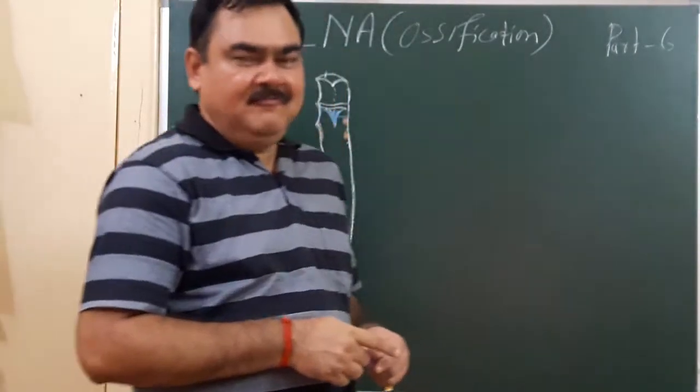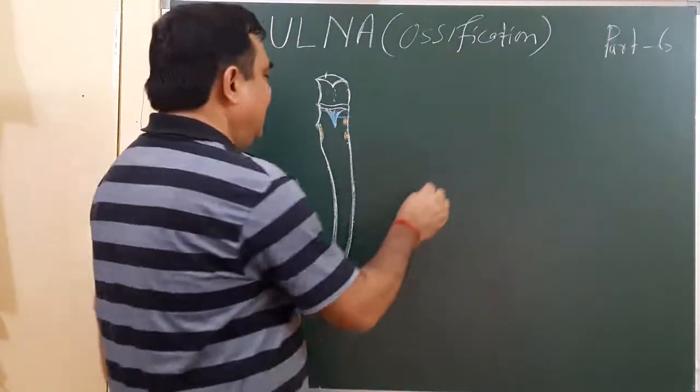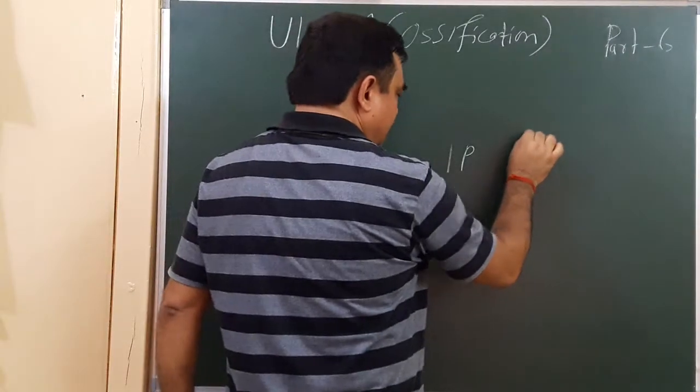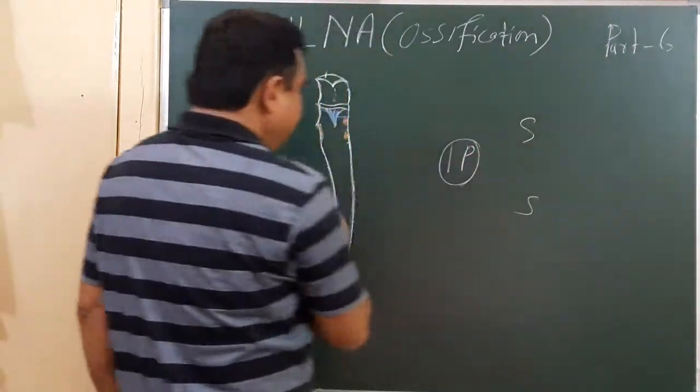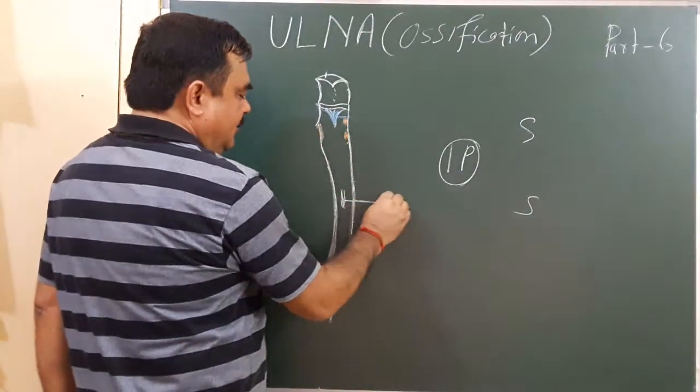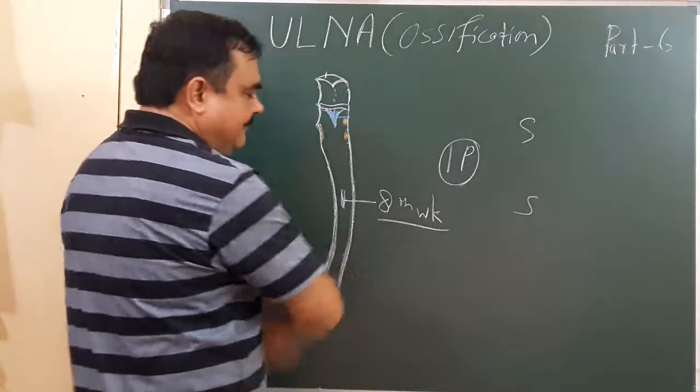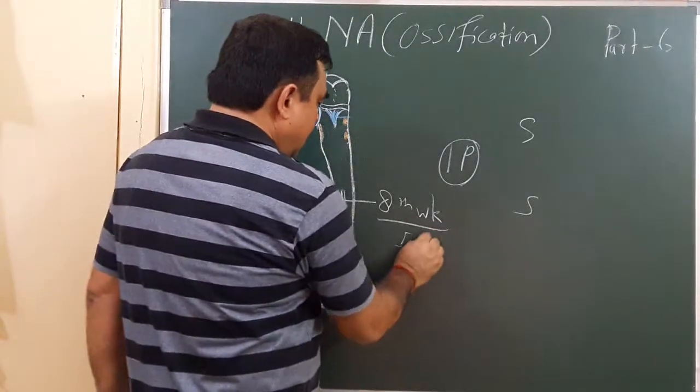Ulna ossifies from one primary and two secondary centers. One primary center appears in the shaft during the 8th week of intrauterine life.